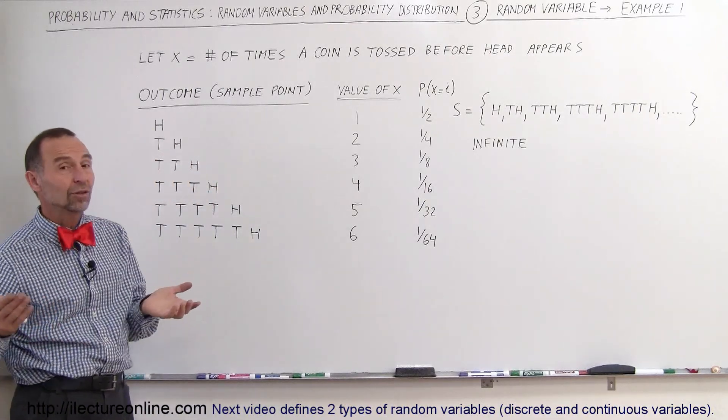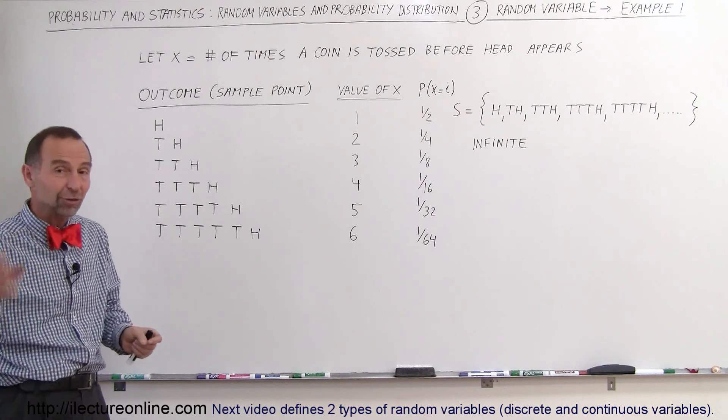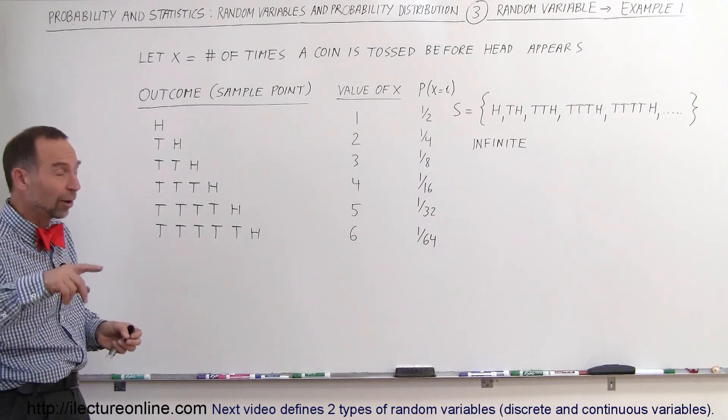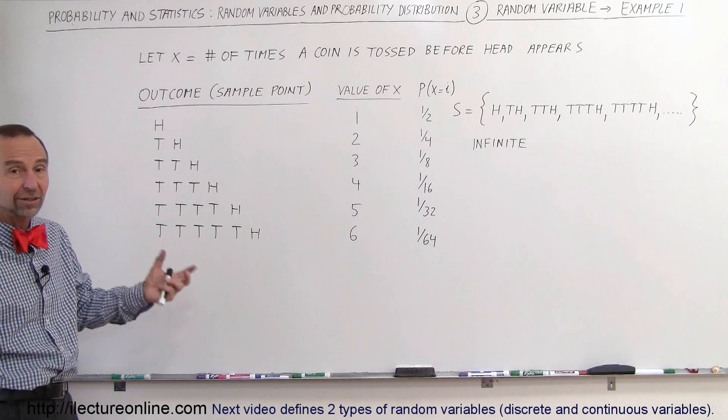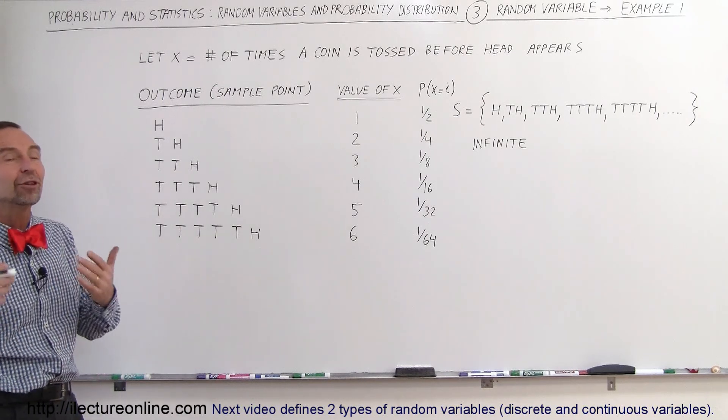But in actuality, we could do this an infinite number of times. For some reason, we keep tossing the coin, it keeps turning out tails, and tails, and tails. We do a hundred times, a hundred tails. You can see where X actually can become an infinite number.